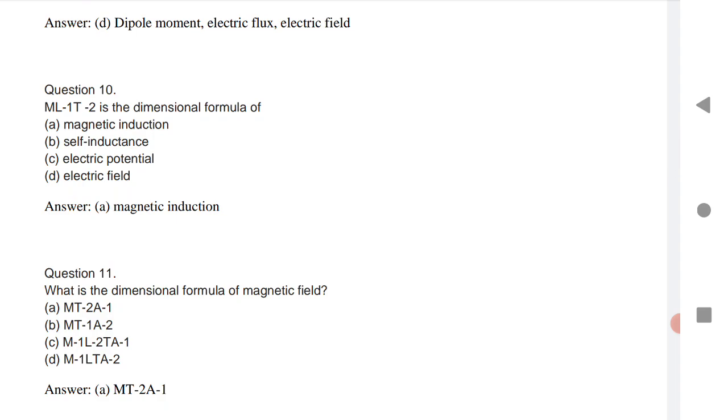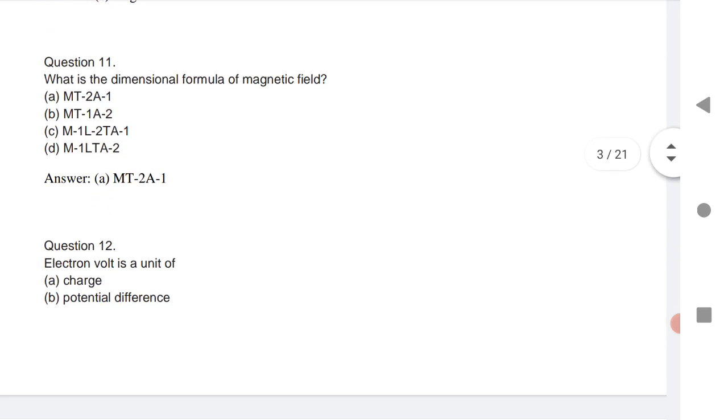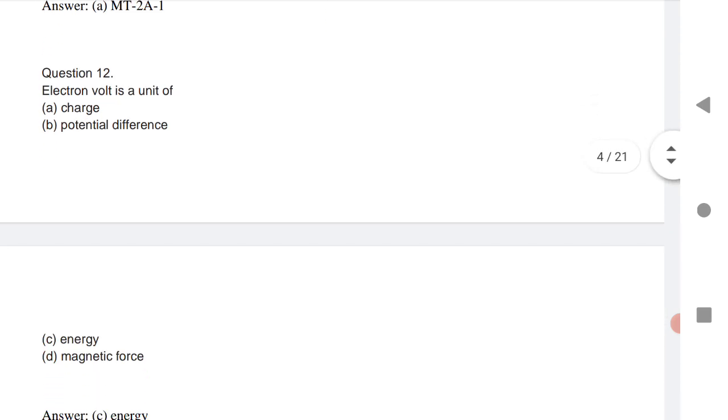Next is question number 10. ML power minus 1 T power minus 1 is the dimension formula of magnetic induction. Then what is the dimension formula of magnetic field? The option is A. Next the very important question.